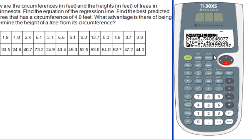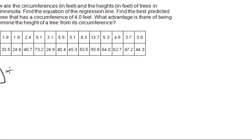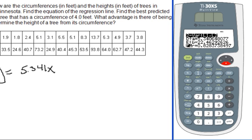So saying that, we can find the regression line equation using the a value and the b value. Remember that a is the slope of the line and b is the y intercept of the line. So that means that we'll have our regression line as y equals m which is our a value. So we'll say about 5.341, and then x plus 22.463.